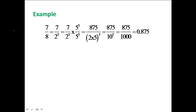For example, 7/8 is a terminating decimal representation giving 0.875. Applying the rule, 7/8 can be written as 7 divided by 2^3, since 8 = 2^3. Multiplying the numerator and denominator by 5^3, the numerator becomes 875 and the denominator becomes (2 × 5)^3, using laws of exponents. Simplifying further, we get 875 divided by 10^3, which is 875/1000, giving 0.875.